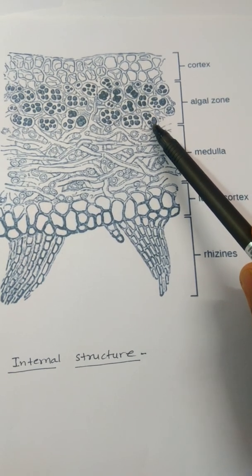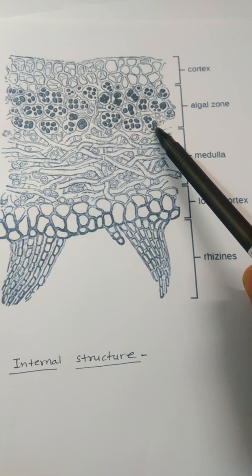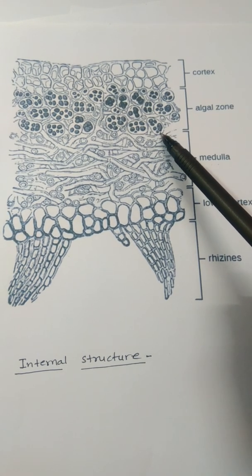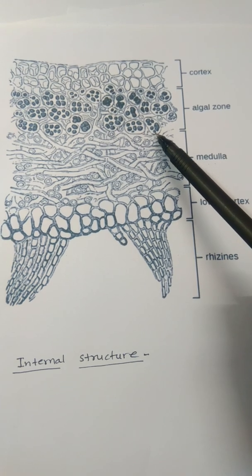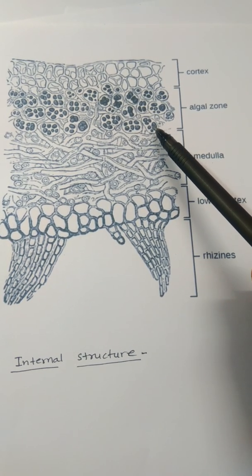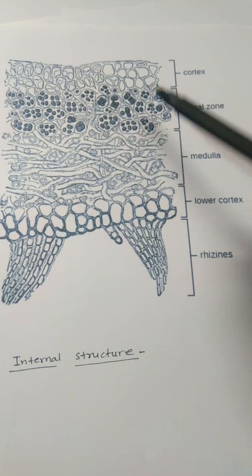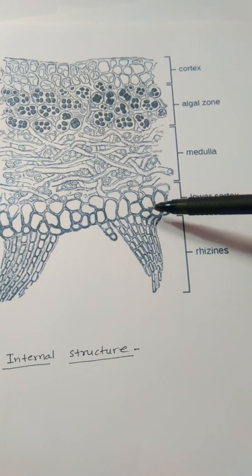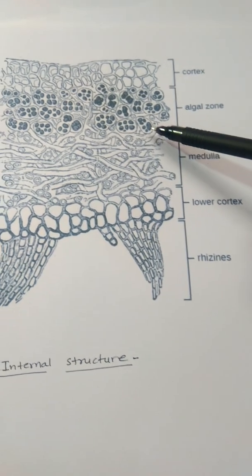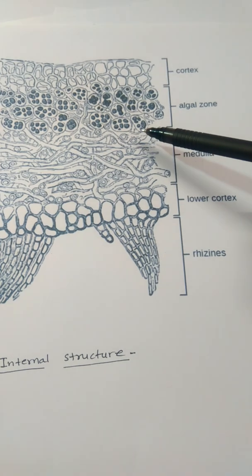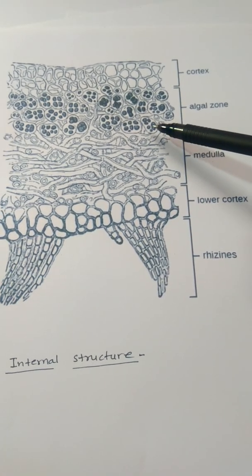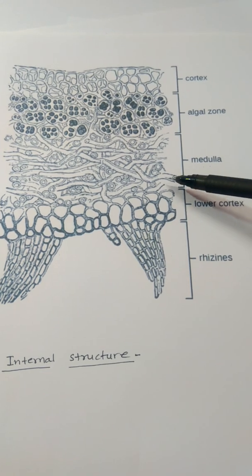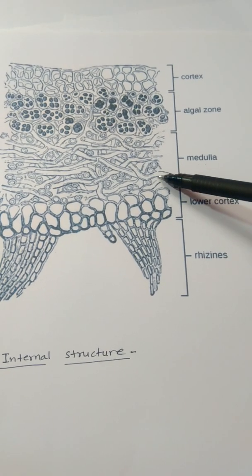In the algal zone, algal cells prepare food material using sunlight. This prepared food is absorbed by the fungal partners through specialized cells called appressoria. The fungal partners provide shelter, moisture, water, and minerals to the algal partner in return. So both partners are benefited. Below the algal zone is another zone called the medulla.